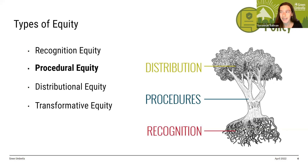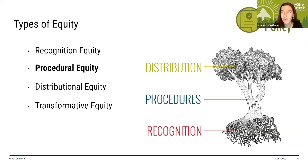First is recognition — identifying and acknowledging injustices affecting specific populations, accounting for stakeholder norms, values, and expertise. I like to think of this as asking: what is the context and how are problems being characterized and communicated, including historical information, data, current resident experiences, and more. As shown in the image, this really is the roots or the foundation of doing equitable work.